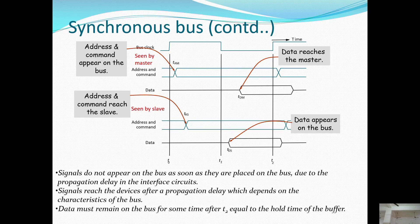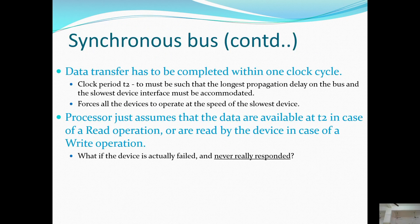Signals don't appear on the bus immediately when placed, due to propagation delay in the interface circuits. Signals reach the device after a propagation delay that depends on the characteristics of the bus. Data must remain on the bus for some time after T2, equal to the hold time of the buffer. Synchronous bus data transfer must be completed within one clock cycle, and the clock period T2 must accommodate the longest propagation delay and the slowest device interface.